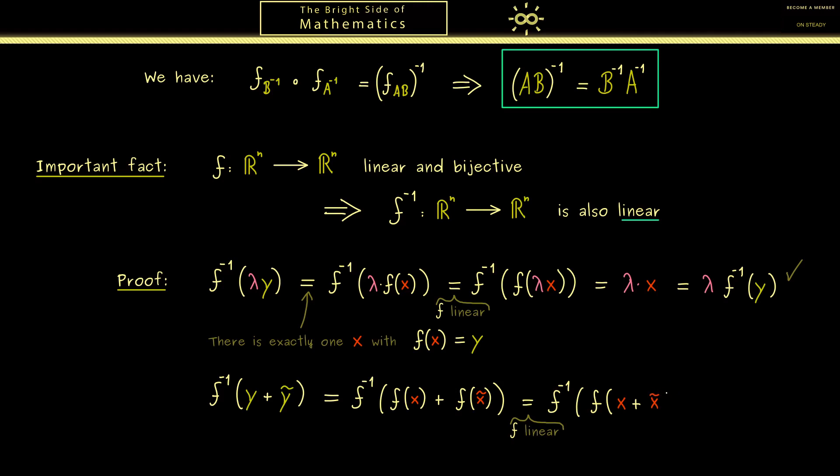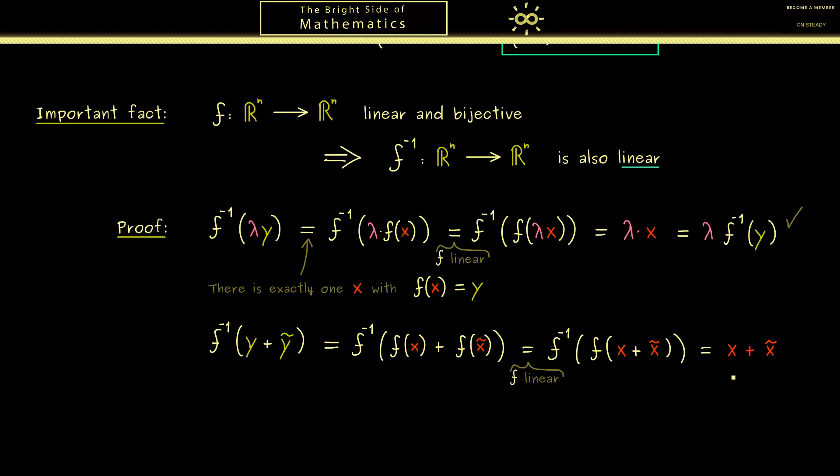And now you see again f inverse and f will vanish. Or more concretely this is now simply x plus x tilde. And then the reasoning is the same as before. X is f inverse of y, and x tilde is f inverse of y tilde. And indeed this is all we need to do. We can read it from left to right again and we see this is the additivity of our map f inverse. And because this works for all vectors y and y tilde our proof is finished.